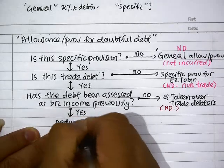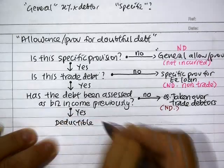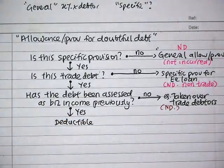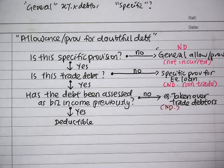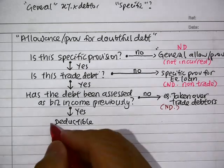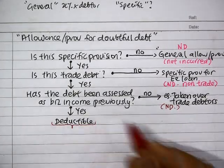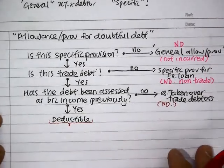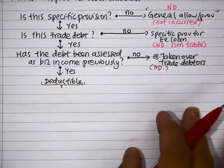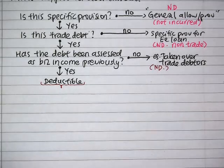Those are the three questions you ask when you see an issue about a provision for doubtful debts. Only when all three answers are yes — it is specific, it is trade debt, and it has been assessed as income previously — will the deduction be given.